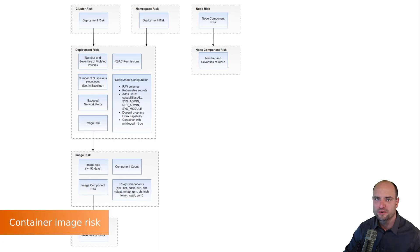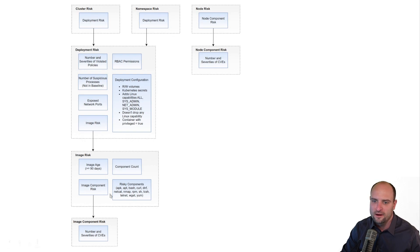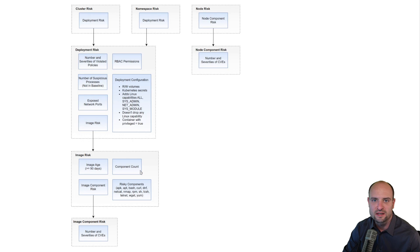The sum of the component risks found in a single image is then one of the factors that determines the overall risk of the given image. However, it is not the only factor. Red Hat ACS further increases the risk of the image if, among the components in the image, it detects some well-known components which are considered extra risky — these are listed and hard-coded in Red Hat ACS. Another factor that increases the image risk is the number of components included in the image. The more components there are, the more risky the image is.